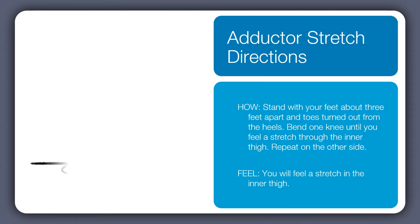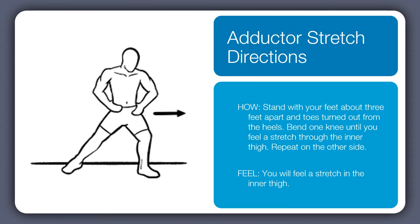For the adductor stretch, you're standing with the feet about three feet apart and toes turned out from the heels. You'll bend one knee and feel a stretch through the straight leg on the opposite side, going as low as you need to get a gentle stretch. Keep the torso upright as you do this.